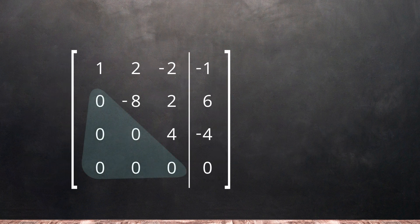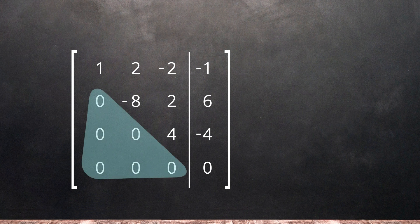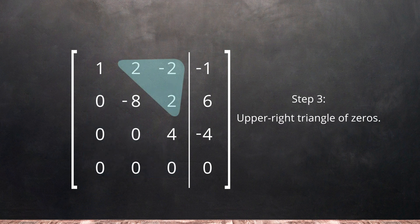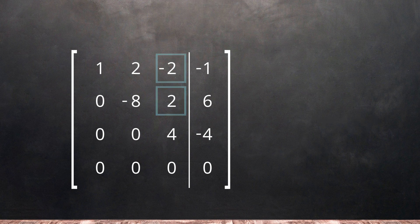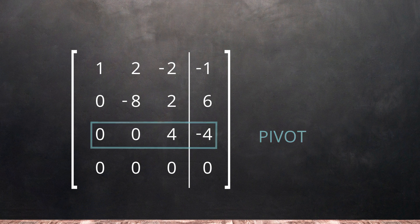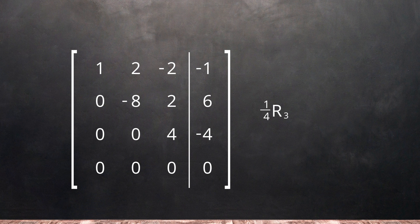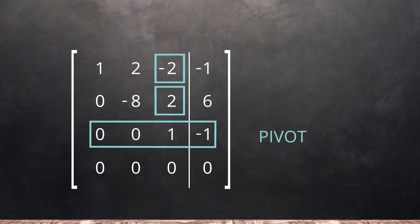Now that the lower left triangle is all 0s, we can focus on making the upper triangle into 0s. We will change the negative 2 and 2 into 0s first using the third row as our pivot. But before we do that, we should make the 4 in row 3 into a 1 by multiplying row 3 by 1 quarter.